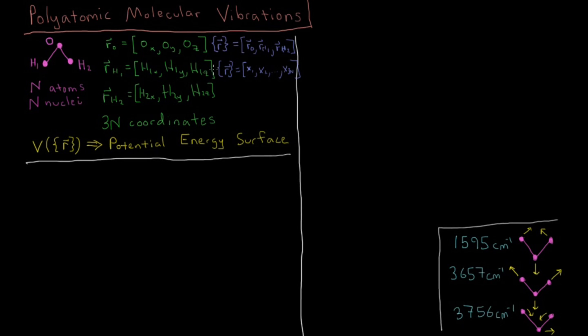And then we can represent these coordinates as a vector which contains all of these individual vectors, or to just put all nine coordinates on equal footing. So we're getting just a vector from x1 all the way to x3n, or x9 in this case.